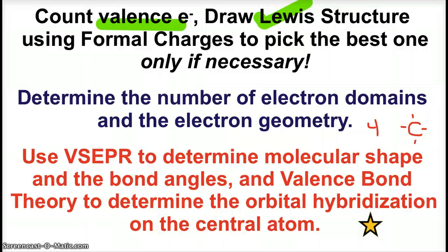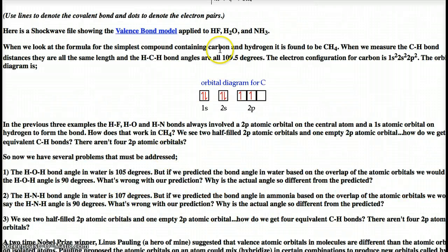Looking at the orbital diagram for carbon—1s² 2s² 2p²—it looks like it should only form two bonds because those two electrons in the p orbitals are ready to be shared. This is where orbital hybridization comes in. Methane, CH₄, our simplest carbon compound, when we experimentally look at this molecule we see there are identical bonds, identical bond lengths.